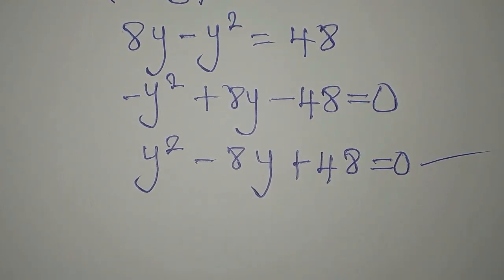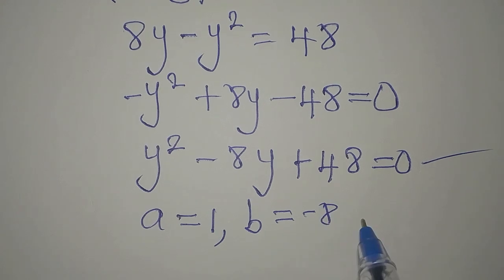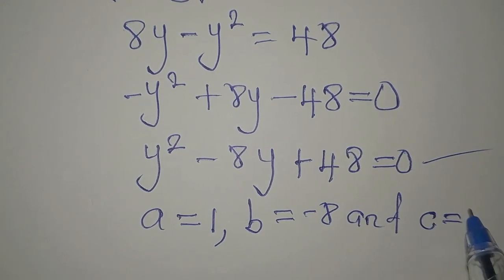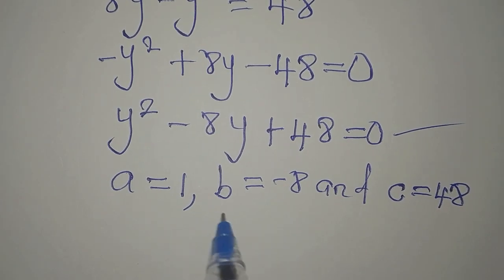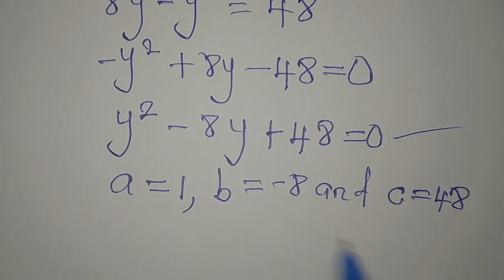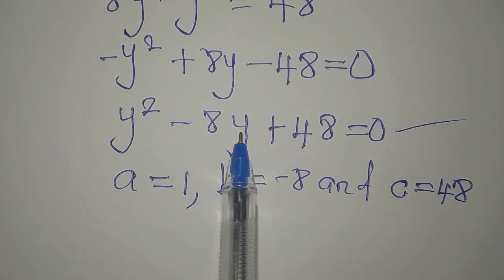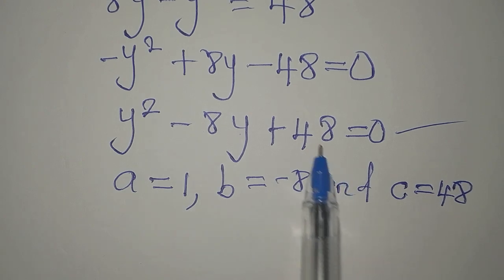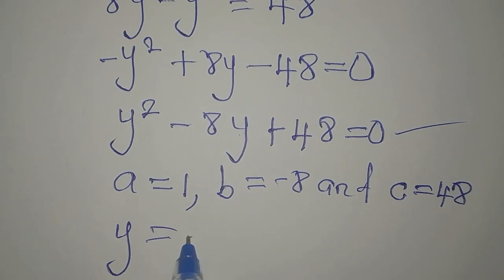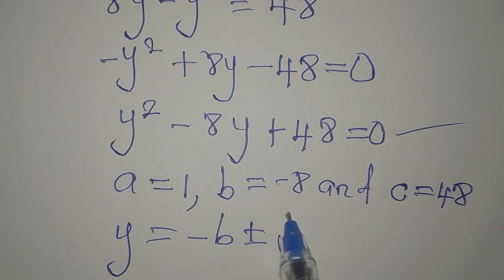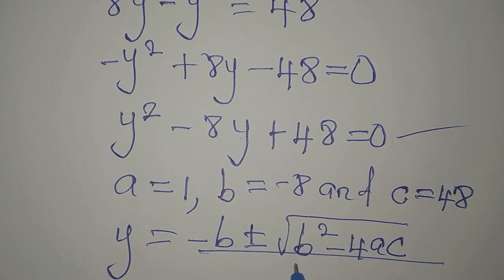We are going to use the quadratic formula. Let's get our a, b, c: a is 1, b is minus 8, and c is equal to 48. How did I get a, b, c? a is the coefficient of y squared, b is the coefficient of y — that is minus 8 — and 48 is the constant, and it's positive. The formula is: y equals minus b plus or minus the square root of (b squared minus 4ac), all over 2 times a.